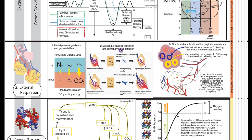The second thing is matching alveolar ventilation — how much air is in the alveolus — with pulmonary blood perfusion, which is how much blood is reaching that alveolus. The third is the structural characteristics of the respiratory membrane. Qualities in that membrane can impair oxygen getting into the blood — it could be fluid, mucus, or less membrane surface area.